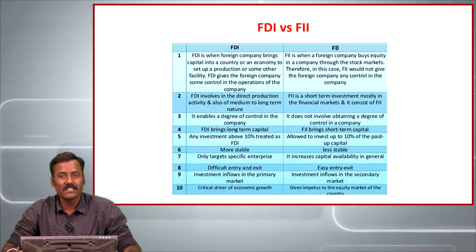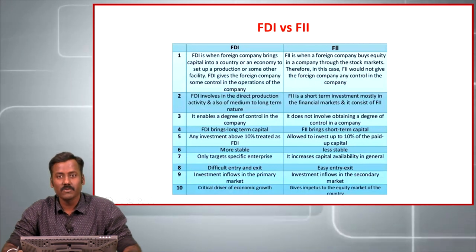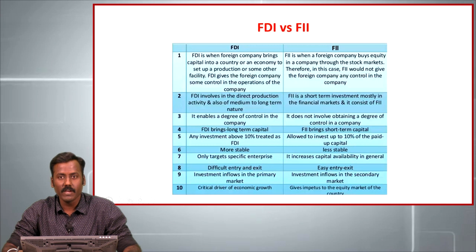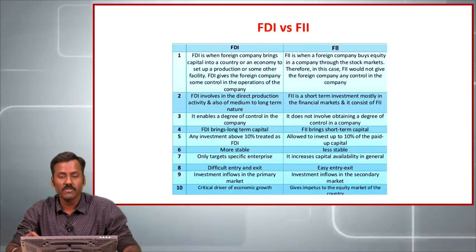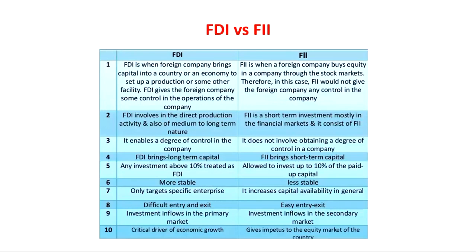Before going into the topic, it is imperative for us to learn about the differences between FDI and FII. FDI is foreign direct investment and FII is foreign institutional investment. The basic classification is that if a foreign investor is buying more than 10% of the equity shares in a company, then it becomes FDI. If the total purchase of equity shares is less than 10%, then it is FII.